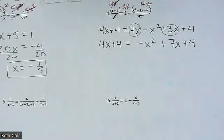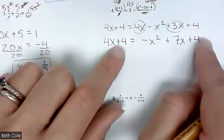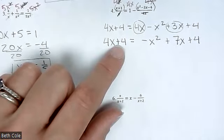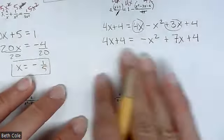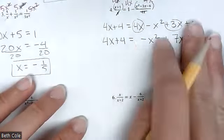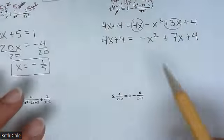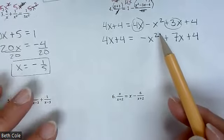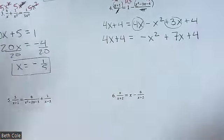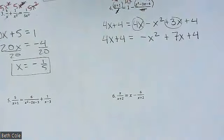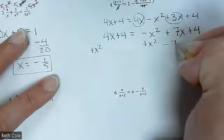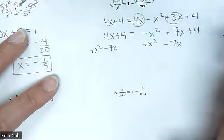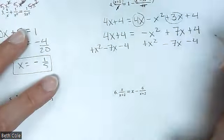Then you want to evacuate. It kind of doesn't matter which side you evacuate to, but I would actually move all three of these terms to the other side. I want the X squared to be positive — I find it really difficult to factor if that X squared is negative. Try to line it up; it's really more about organization than anything else. You want it to equal zero.